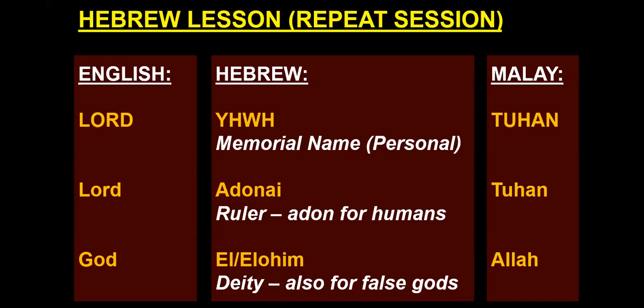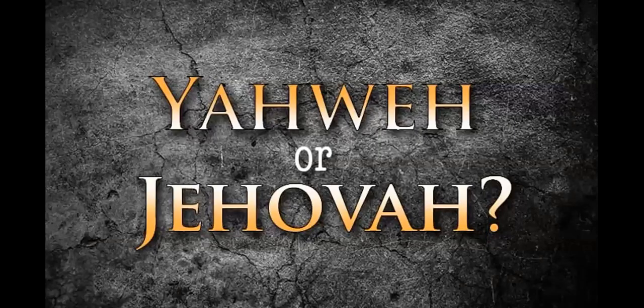In Malay, Adonai is Tuhan — you can see how it's related to the word tuan. In English you also see the word God, from the Hebrew El or Elohim, which just means deity. In the Bible it's also used for the false gods of the nations, like the Egyptian and Canaanite gods, and in Malay it's translated as Allah. You can see the relation between Elohim and Allah.